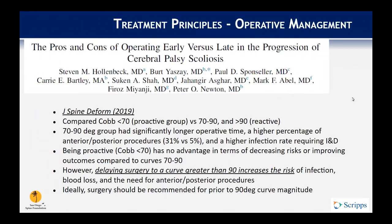A study published in Spinal Deformity examined timing of intervention for CP patients. They categorized patients into a proactive group with curves less than 70 degrees, a 70 to 90 degree group, and a reactive group with curves greater than 90 degrees. The 70 to 90 degree group had significantly longer operative times, a higher percentage of anterior-posterior procedures, and higher infection rates requiring irrigation and debridement. Being proactive had no advantage in decreasing risks or improving outcomes compared to the 70 to 90 degree group.